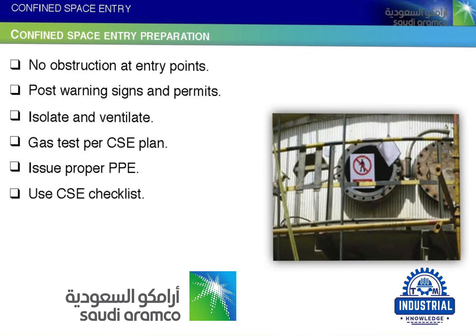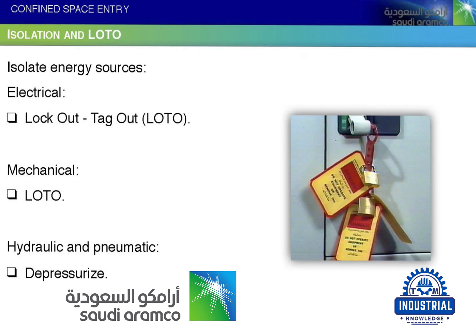Ensure no obstruction at entry points. Post warning signs and permits. Isolate and ventilate. Conduct gas testing per the CSE plan. Issue proper PPE. Use the CSE checklist and LOTO to isolate energy sources.